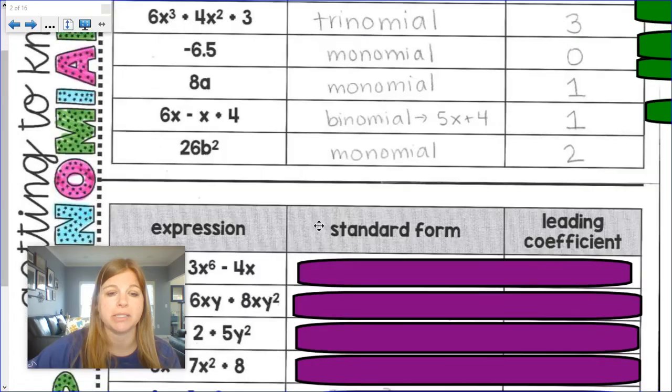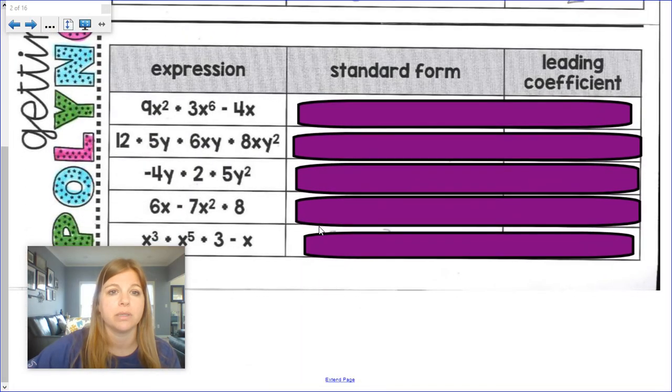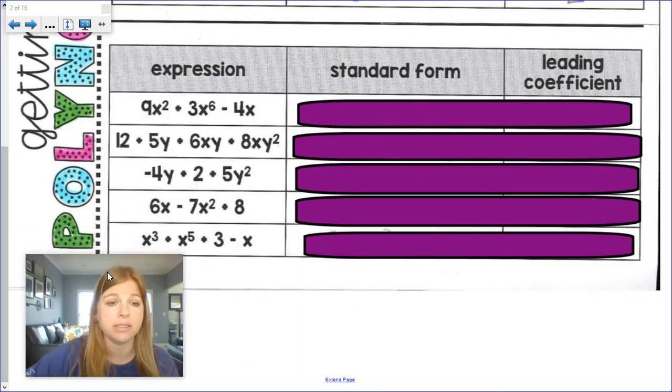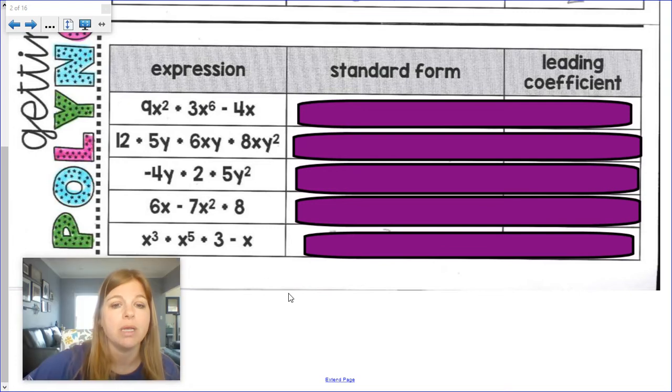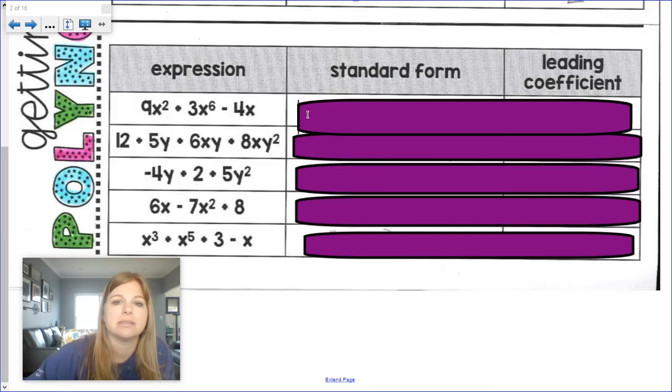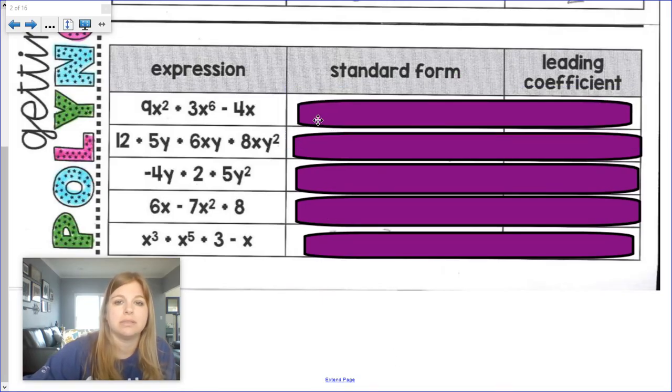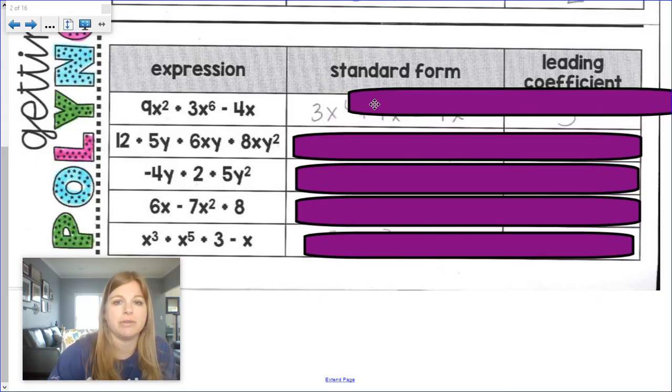Let's try some practice problems now. Feel free to pause if you want to try these out on your own or just follow along with me. First one. 9x squared plus 3x to the 6th minus 4x. Highest term. Degree. 3x to the 6th.